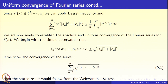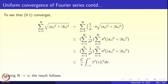We begin with a simple observation: |aₙ cos(nx)| + |bₙ sin(nx)| ≤ √(|aₙ|² + |bₙ|²). So if we show that Σₙ₌₁^∞ √(|aₙ|² + |bₙ|²) converges, we can use the Weierstrass M-test to conclude that Σ(aₙ cos(nx) + bₙ sin(nx)) converges absolutely and uniformly on [−π, π]. Our task is to prove that series 9.1 converges. We look at the Nth partial sum and introduce a factor of 1/n — multiply and divide by n — and apply the Cauchy-Schwarz inequality.